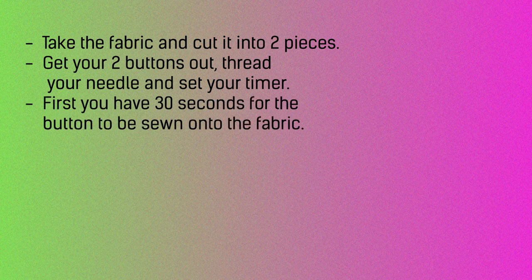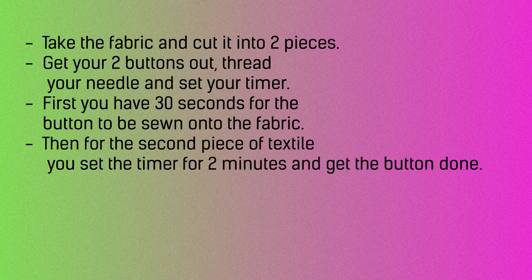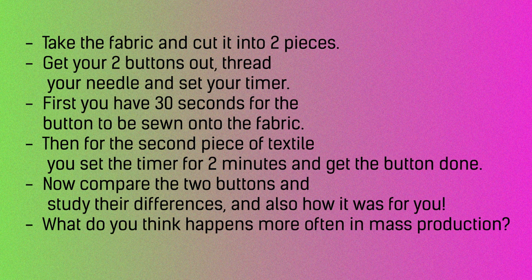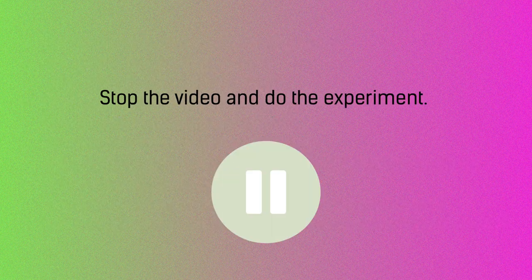First, you have 30 seconds for the button to be sewn onto the fabric. Then, for the second piece of textile, you set the timer for two minutes and get the button done. Now compare the two buttons and study their differences and also how it was for you. What do you think happens more often in mass production? Stop the video and do the experiment.